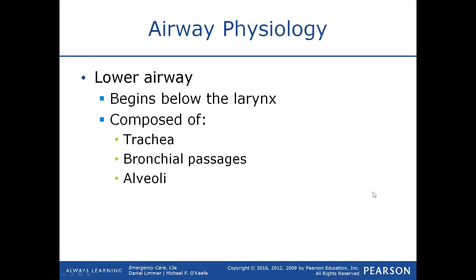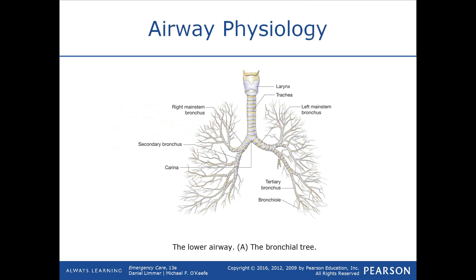The glottic opening is protected by the epiglottis. The lower airway begins below the larynx — the larynx is your voice box; in males, the Adam's apple is quite dominant and that is the actual larynx. The lower airway is composed of the trachea, a rigid tube that divides into a left and right main stem bronchi, which divide into smaller bronchi, then into terminal bronchioles surrounded by air sacs called alveoli.